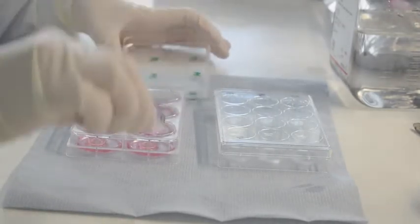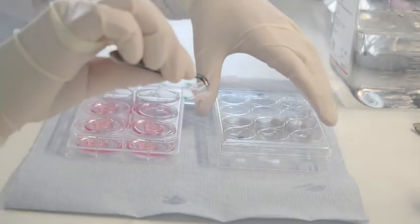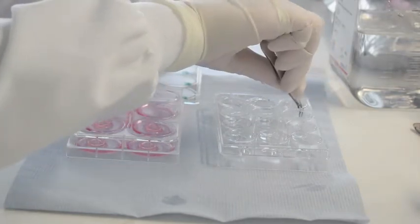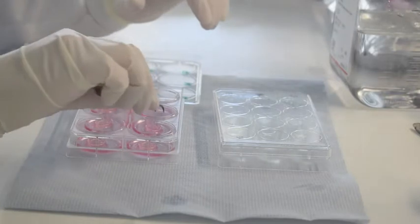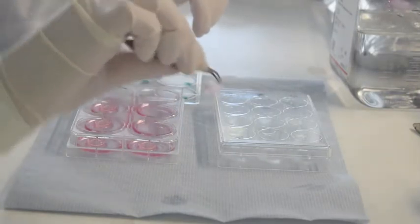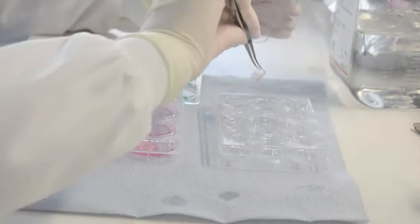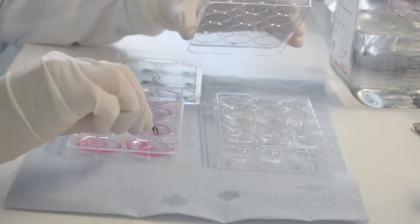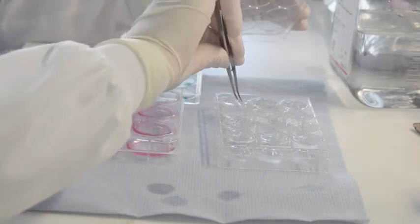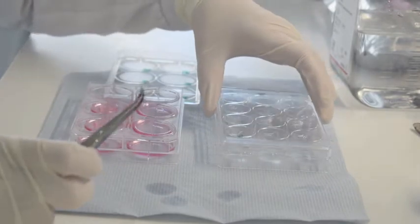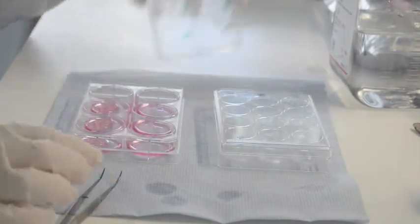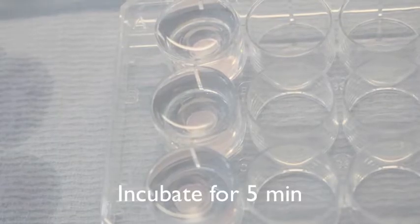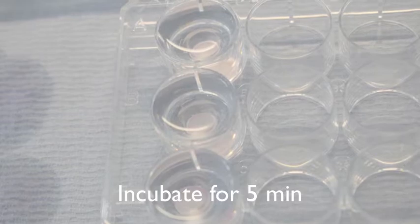Tissues are removed from the culture plate, excess medium is dabbed off, and tissues are then lowered at an angle into the 5 millilitres DPBS. Tissues remain in the DPBS wash for 5 minutes.